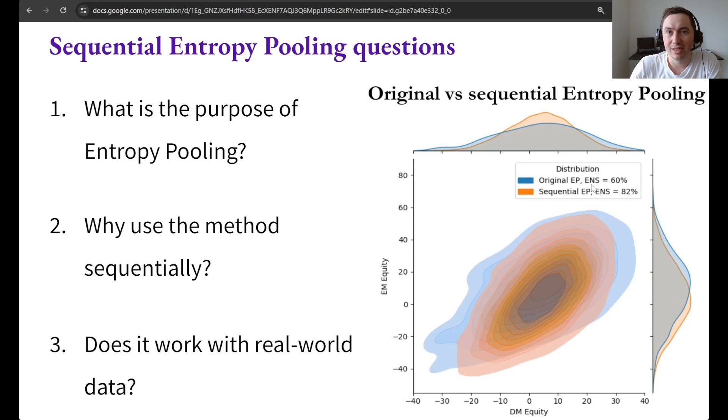Within the pooling there is a related number called the effective number of scenarios and we want this number to be as high as possible. So I will leave you a link in the description where you can read about what this quantity is and we will see it in the code a bit later.